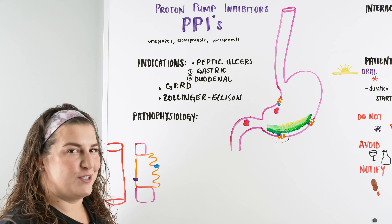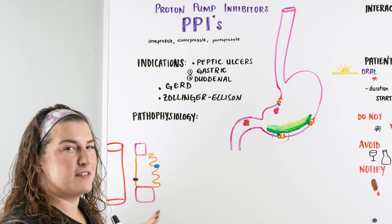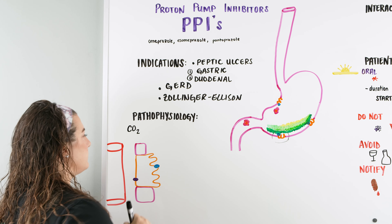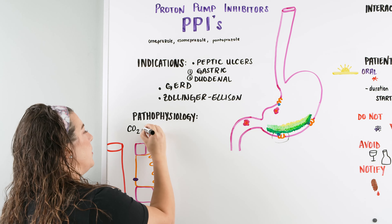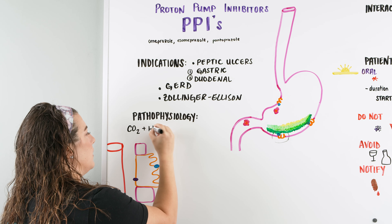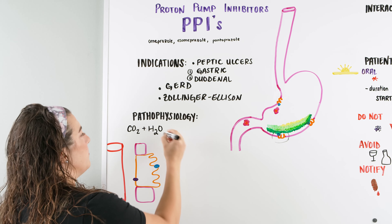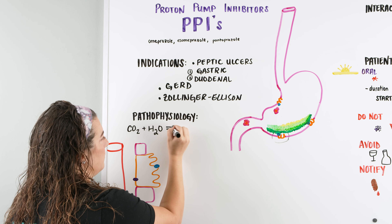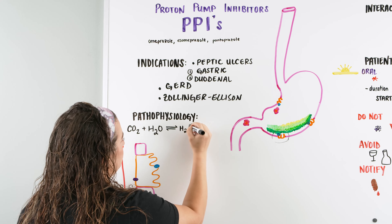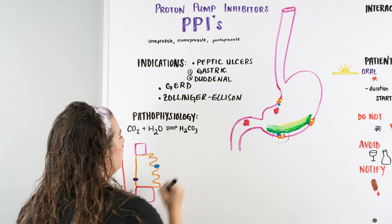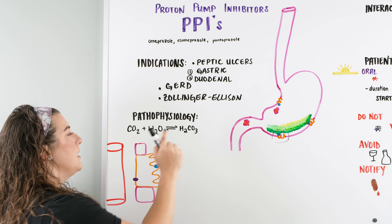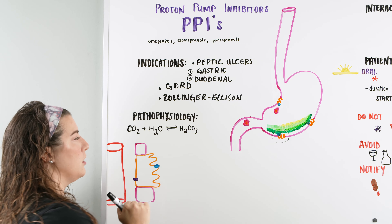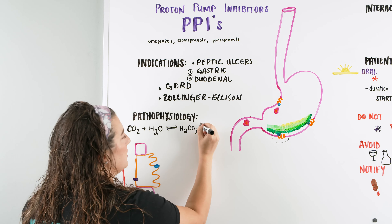This brings us back to chemistry — and I promise it isn't as painful as it sounds. In our body, we have waste products. One of them is CO2. We also have lots of water, H2O. When we combine those two, we get H2CO3 — that's called carbonic acid. And within our body, carbon dioxide and water join together to make carbonic acid, and then this can also break apart.